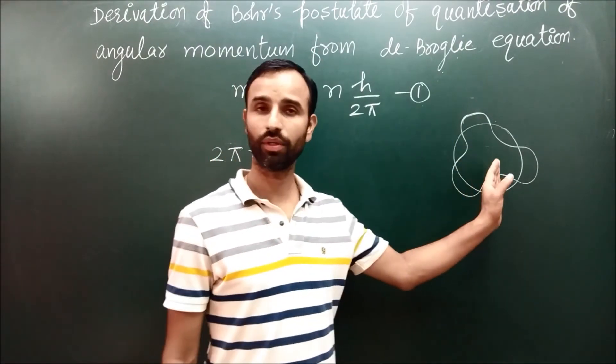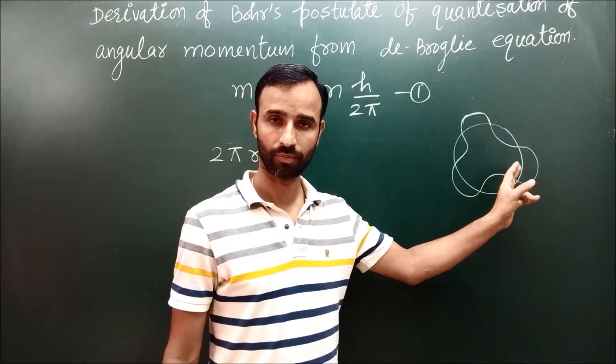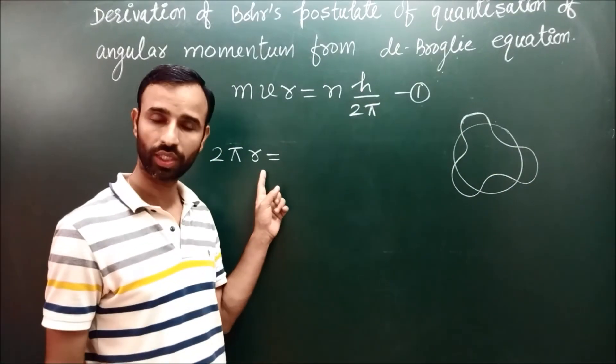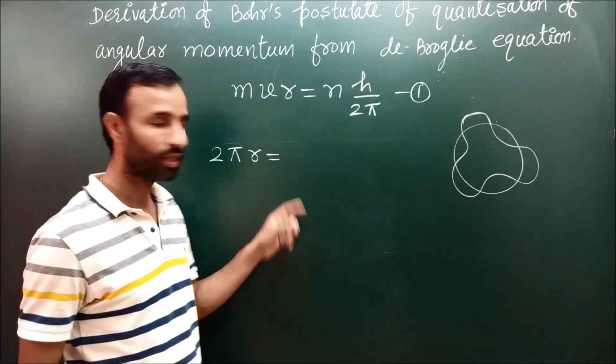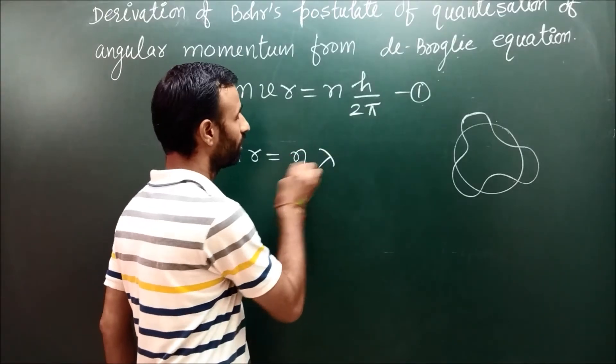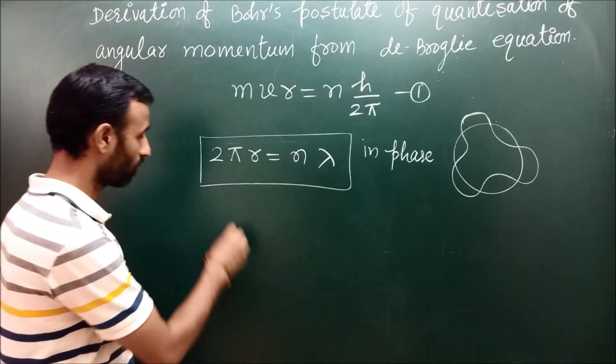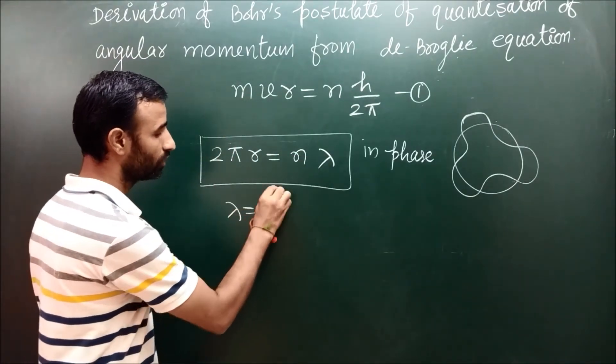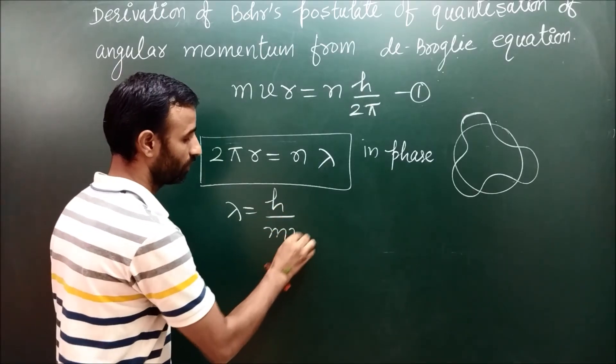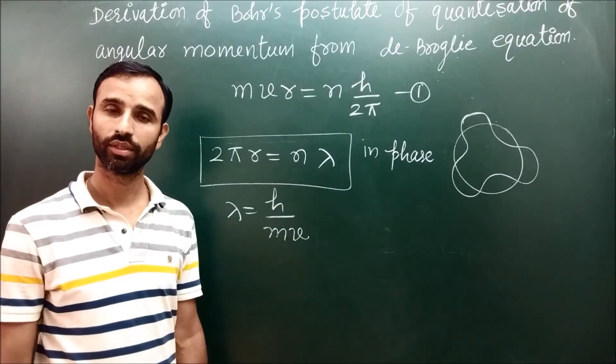For the wave to be in phase, circumference of the orbit, that is 2πr, is integral multiple of λ. And according to de Broglie equation, λ is equal to h upon mv.